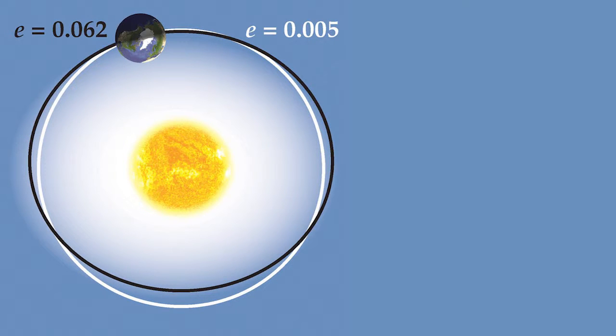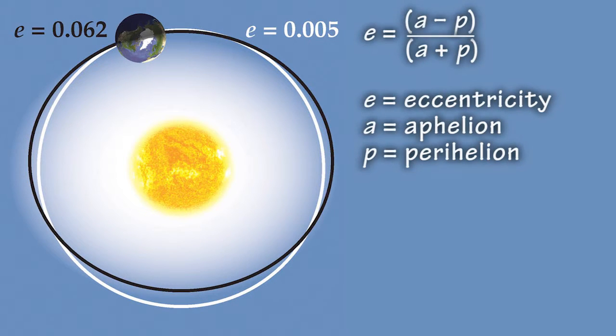The elliptical shape of Earth's orbit around the Sun is characterized by its eccentricity. Eccentricity in mathematical terms is E equals A minus P over A plus P,